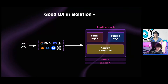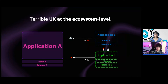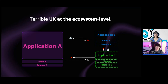But chain abstraction isn't about individual application UX as much as it is about ecosystem-level UX. The real issue in Web3 today, especially within the Ethereum ecosystem, is that UX is terrible at the ecosystem level. We have great UX in the confines of a given application with account abstraction, social logins, and so on. But when you look at the larger Web3 ecosystem, UX is a real problem — and this is because of fragmentation primarily.